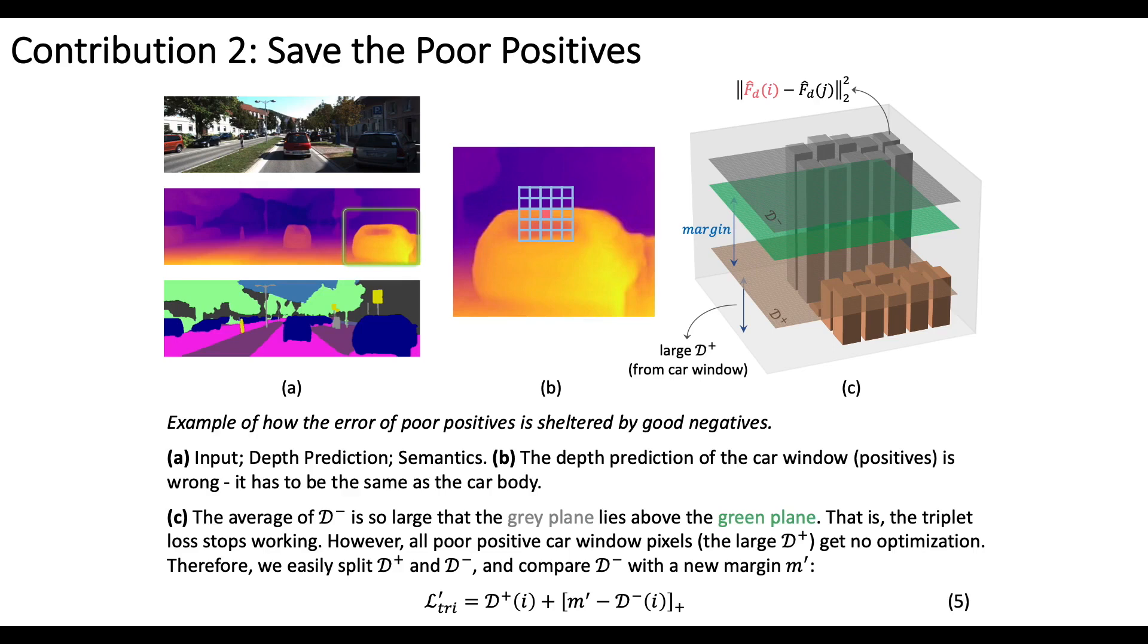The negatives are so good enough that the green plane lies beneath the gray. So again, no optimization happens. Therefore, we easily split D positives and D negatives and compare D negatives with a new margin M prime, which gives more direct optimization to D positives.